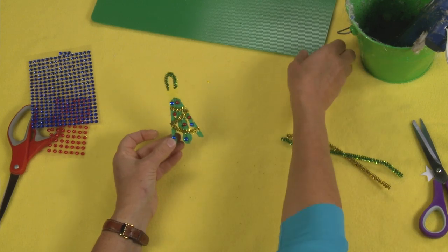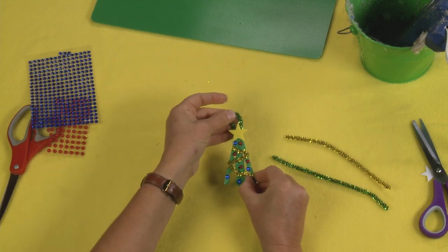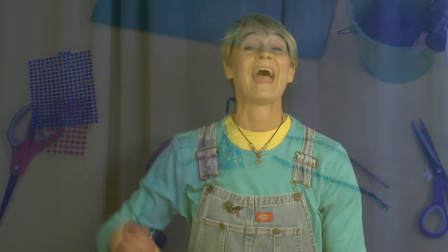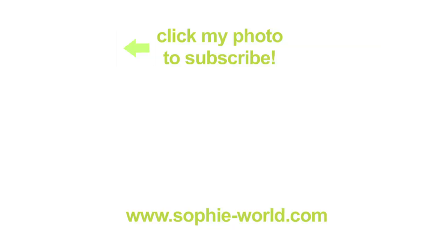And there you have it. Oh, Tannenbaum. And there you have it. A little Christmas tree ornament made out of clothespins. For more fun ideas like this one, check us out at sophie-world.com.